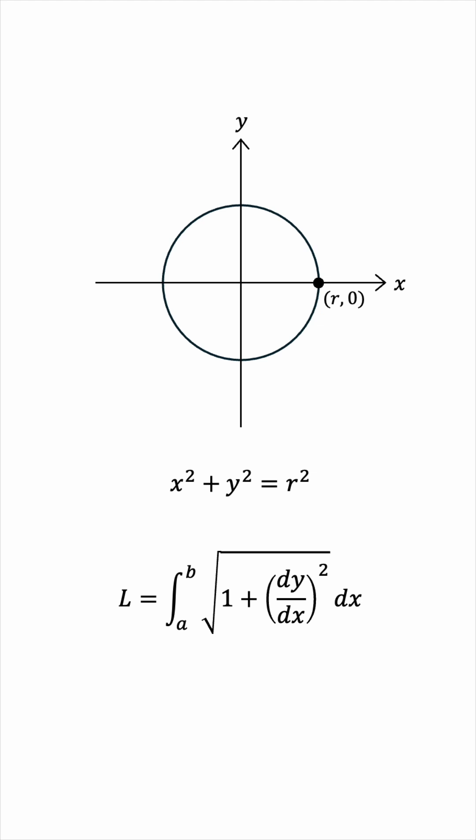Let's find dy by dx. We'll take x squared to the other side, and square root both sides, with the plus or minus of course. Now, let's find dy by dx.